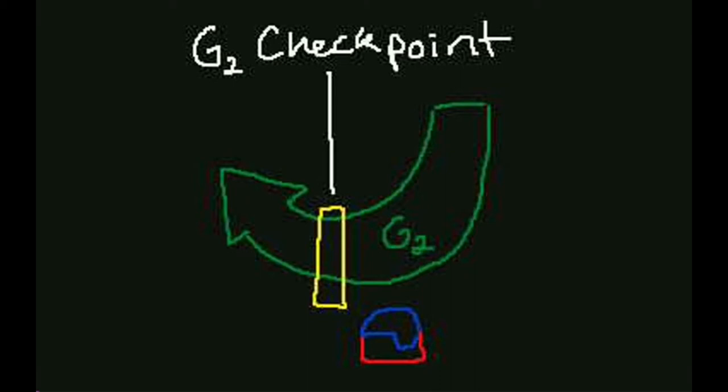The cyclin and CDK combine, producing MPF. These unlock the oncogenes, allowing the cell to move into the M phase.